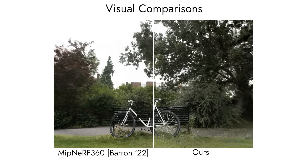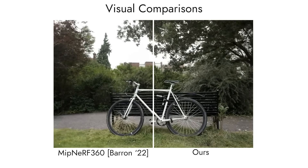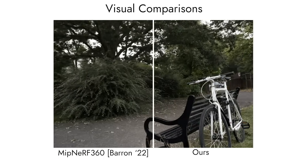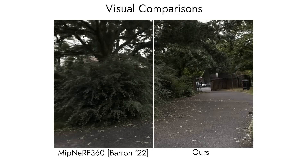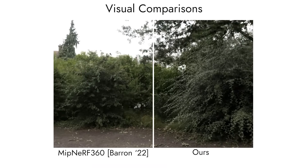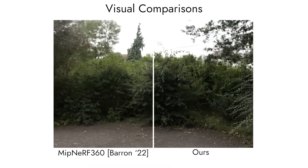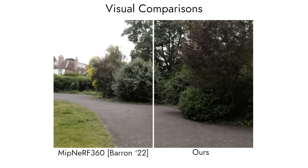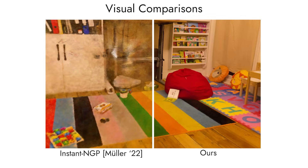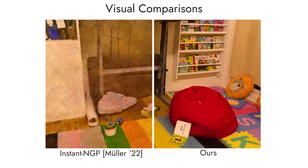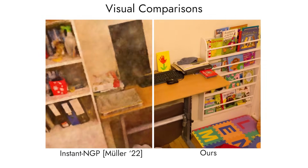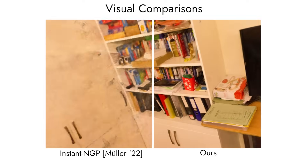Here we compare side-by-side with several algorithms. In many cases, we are better than BipNerd360 while rendering faster than 100 frames per second. We also achieve higher visual quality than Instant NGP with similar training times and fewer failure cases.